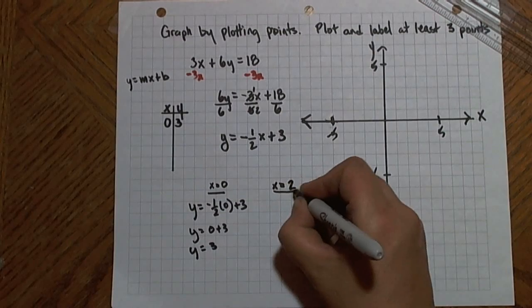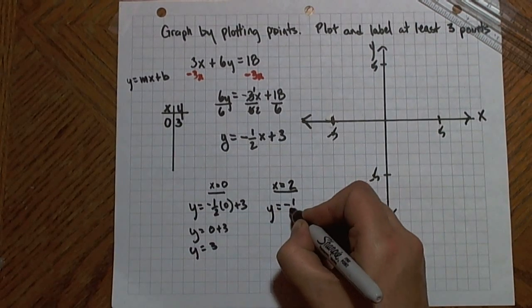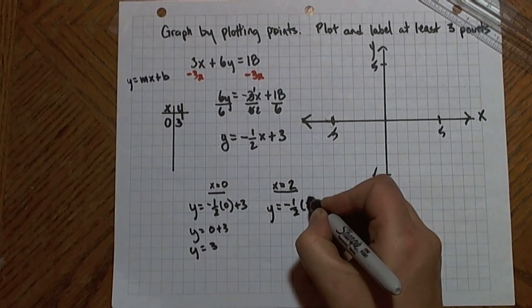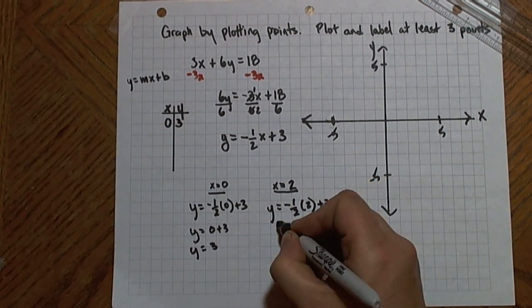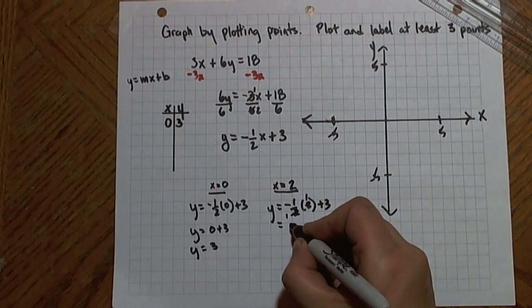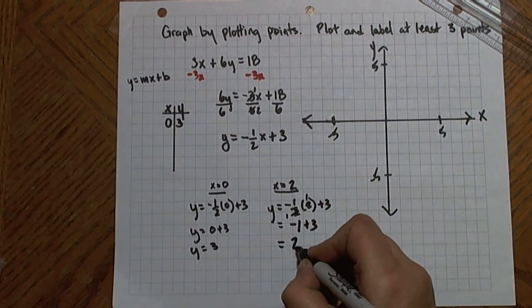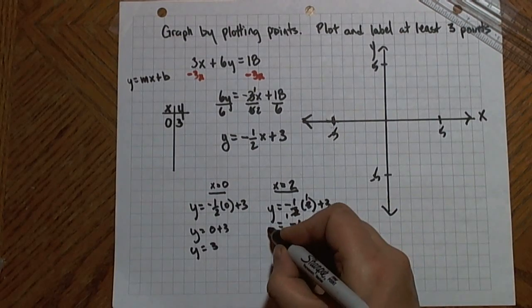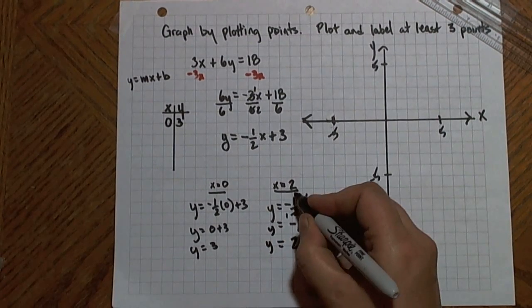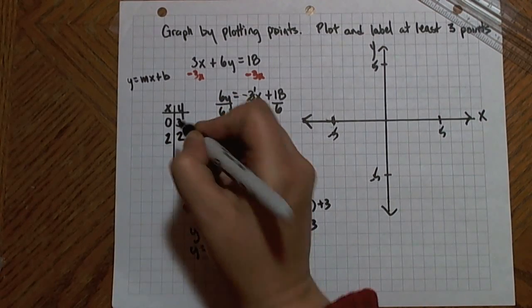So I could go x equals 2, in which case I would get y equals negative 1 half times 2 plus 3. Negative 1 half times 2 is negative 1 plus 3 is positive 2. So when x equals 2, y equals 2. So I'll put in 2 for x, and I got 2 for y.